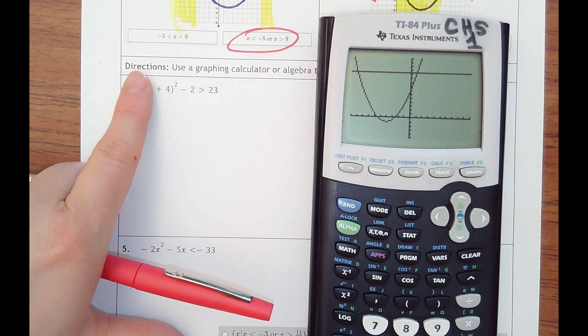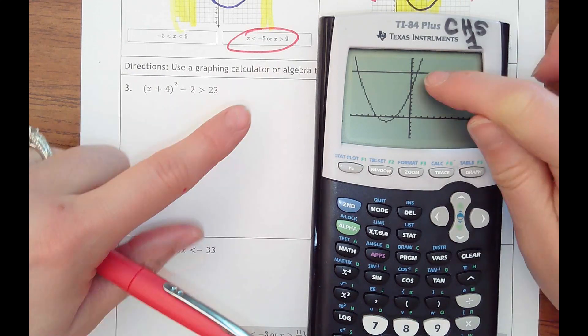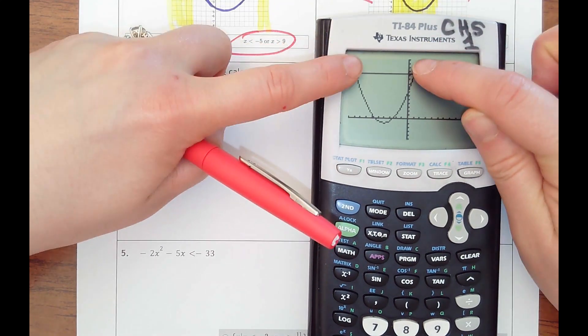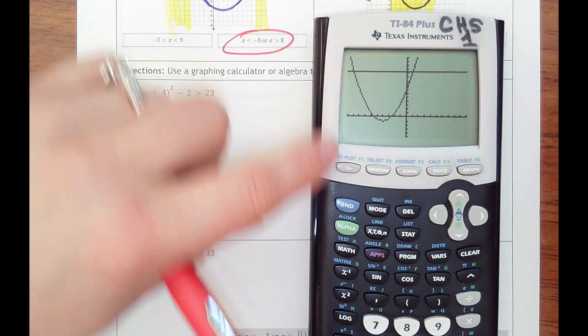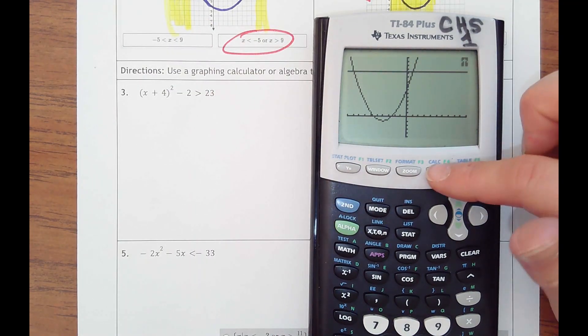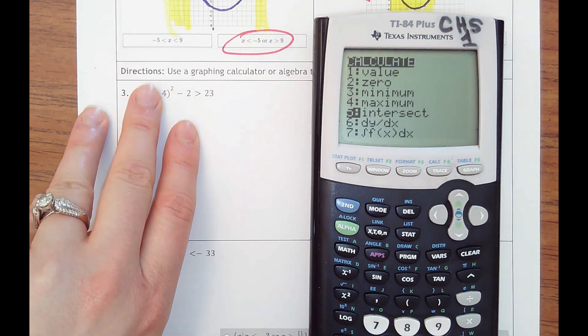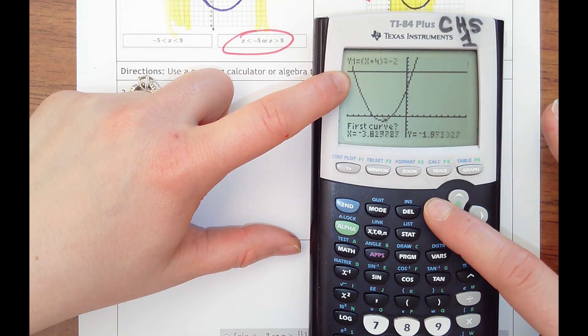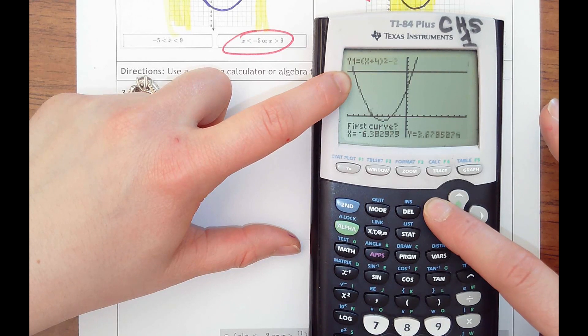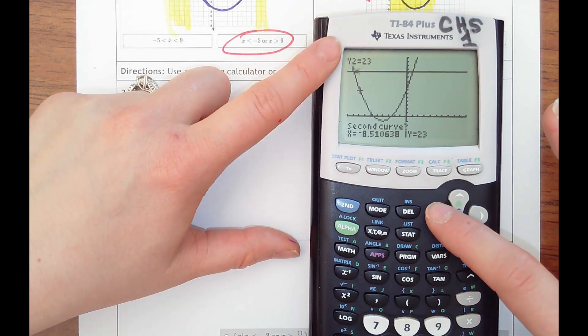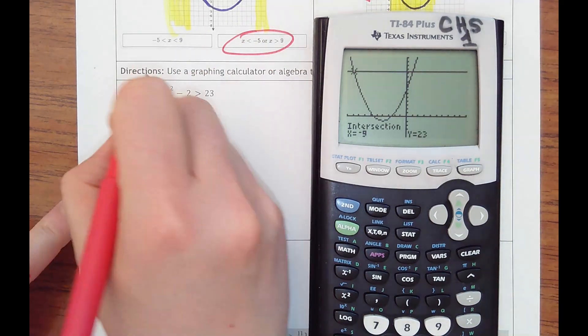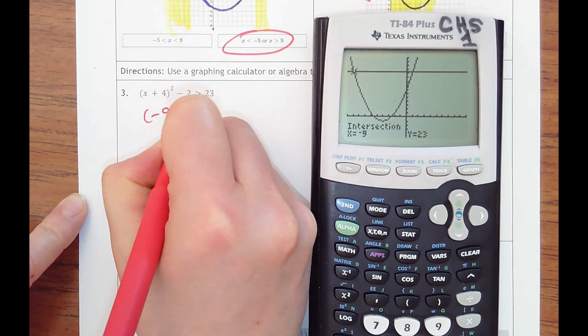And I just want to know where is this quadratic greater than 23. So I would want the or because it's these two rays here. I would just figure out where they intersect. So I'd go second calc intersect. I'm going to find this one first. Make sure you're somewhere over close to the point of intersection. Hit enter, then I'm on this one, go to the left of it, hit enter, enter one more time. That tells me it's negative 9 comma 23.